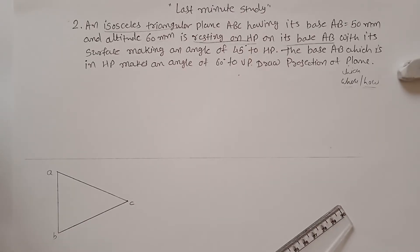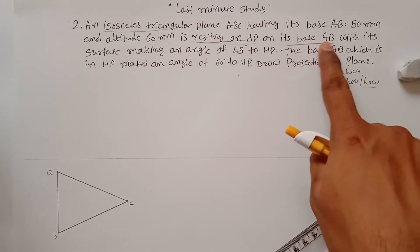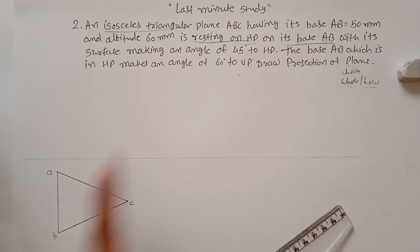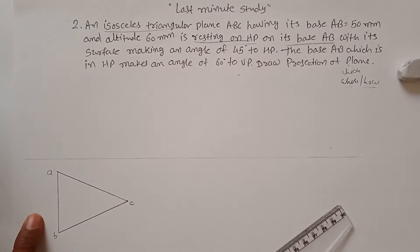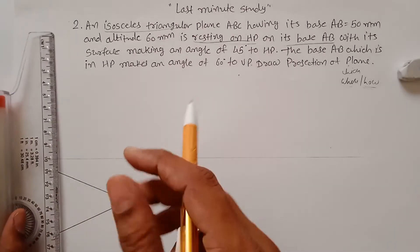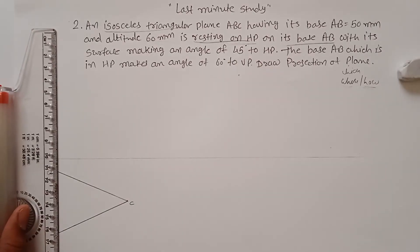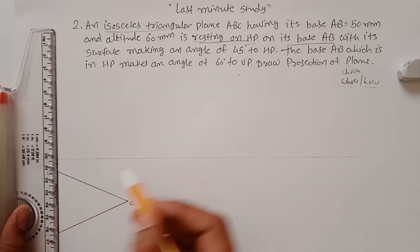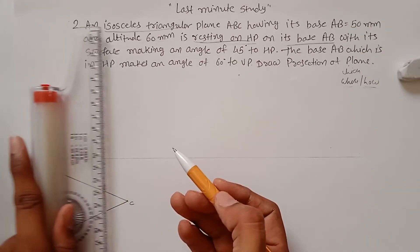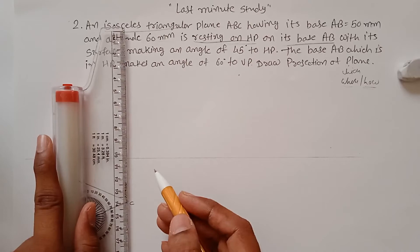This is the isosceles triangle with base 50 mm and altitude 60 mm. The points are labeled A, B, and C. The base AB is on the HP, so your base must be on the first side of your plane. Now you have to draw the front view — this is the top view — by drawing projection lines from each and every corner of your plane.